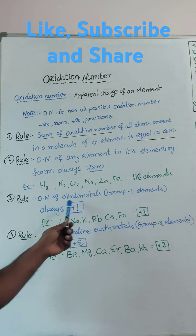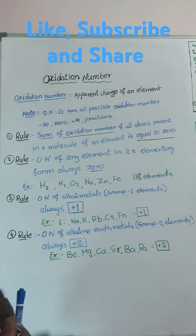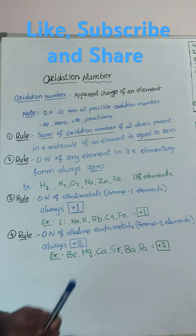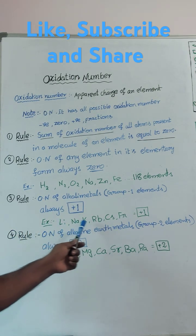Next, oxidation number of alkali metals means group 1 elements, always plus 1. Oxidation number of alkali metals, always plus 1. Lithium, sodium, potassium,